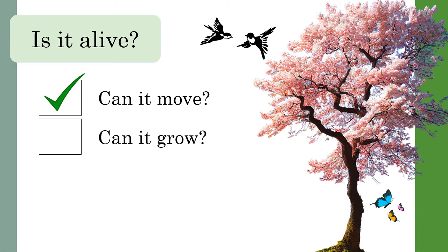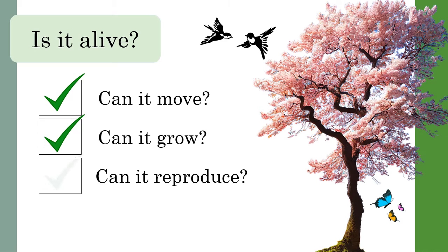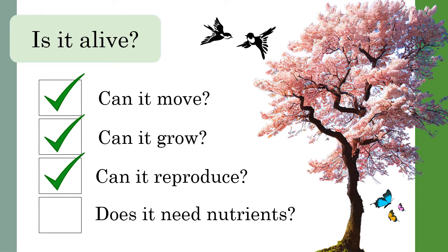Can it grow? Living things can grow and develop from young to adults. Can it reproduce? Living things can reproduce in a variety of ways. Whilst some plants produce seeds, some animals give birth to live young and some animals lay eggs. Finally, does it need nutrients? This could be in the form of food, water or sunlight.